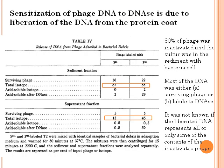This table shows that the sensitivity of phage DNA to DNase is due to liberation of the DNA from the protein coat. According to the table, 80% of phage was inactivated and the sulfur was in the sediment with bacterial cells. Most of the DNA was either in surviving phage or liable to DNase. One disadvantage of this experiment is that it was not known if the liberated DNA represents all or only some of the contents of the inactivated phage.